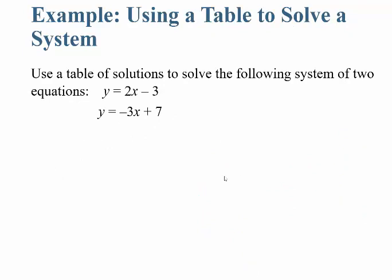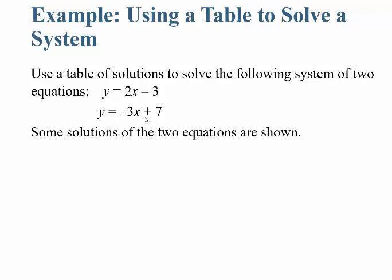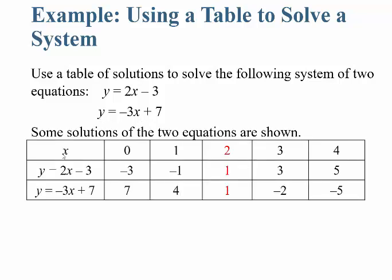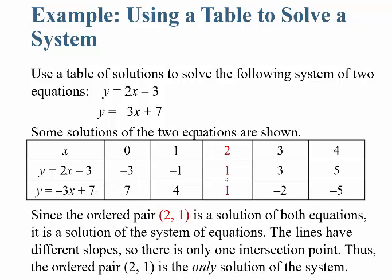Finally, let's use a table of solutions to solve this system: y = 2x - 3 and y = -3x + 7. Set up your table with x values. Plugging in x = 0: first equation gives -3, second gives 7. Plugging in x = 1: first gives -1, second gives 4. Plugging in x = 2: first gives 2(2) - 3 = 1, second gives -3(2) + 7 = 1. Since the ordered pair (2, 1) is a solution of both equations, it's the solution to the system. The lines have different slopes, so there's only one intersection point — (2, 1) is the only solution.